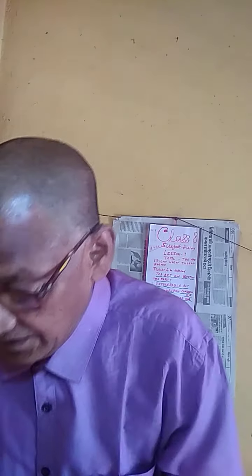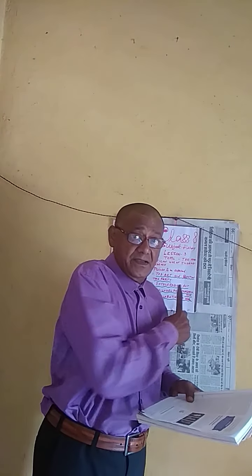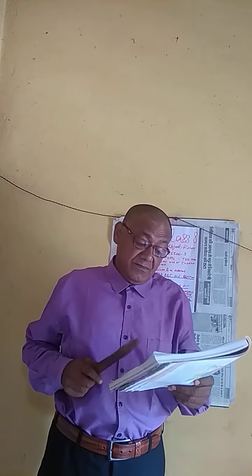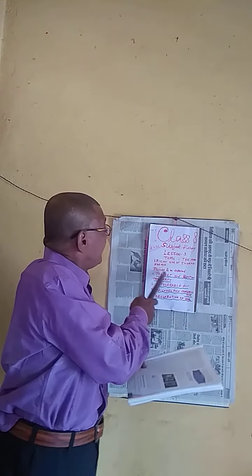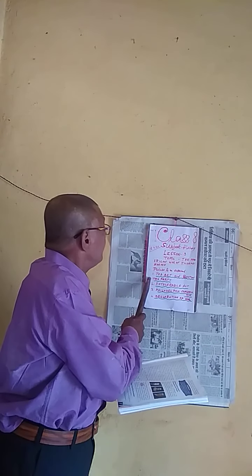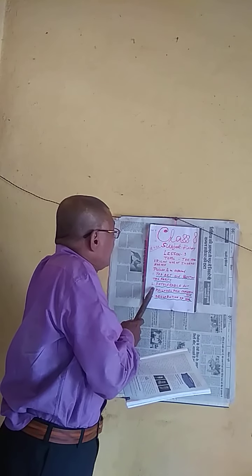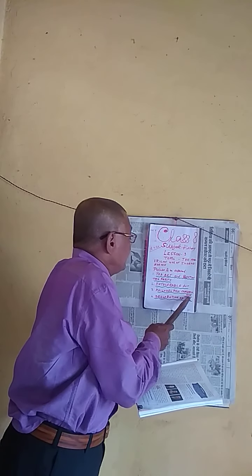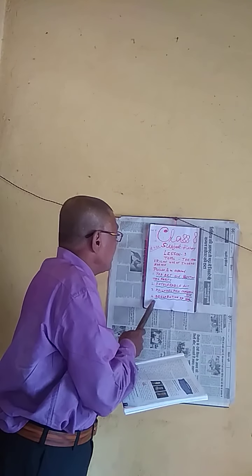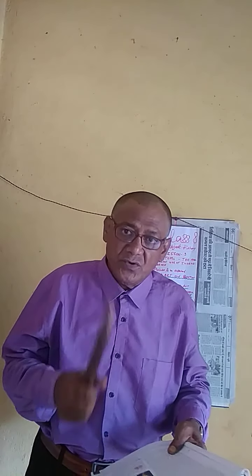Students of Class 8, today I am going to teach you the following points. Number 1: the Tea Act and Boston Tea Party. Second point: Intolerable Act. Third point: Philadelphia Congress 1774. Fourth point: Declaration of War. These are the four points according to which I am going to teach you.